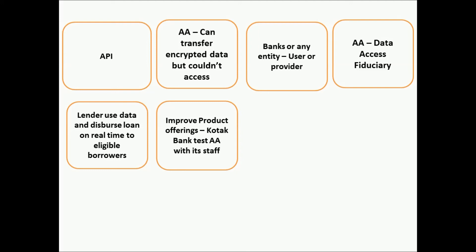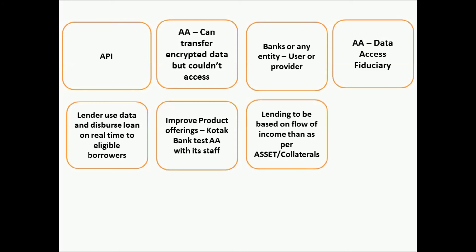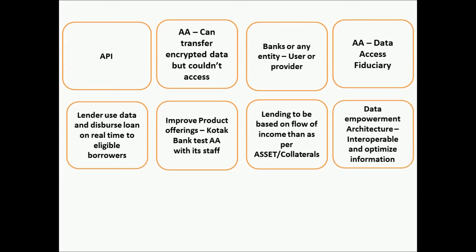Financial lenders — banks and NBFCs — can use data of an individual aggregated from various sources to disperse loans in real time to eligible borrowers. Some banks, based on customer data, can improve product offerings and design products according to customer needs. Kotak Bank is already testing this concept among its staff members. Lending by banks and NBFCs will be based on flow of income — based on digital income or digital footprints — rather than on collaterals.